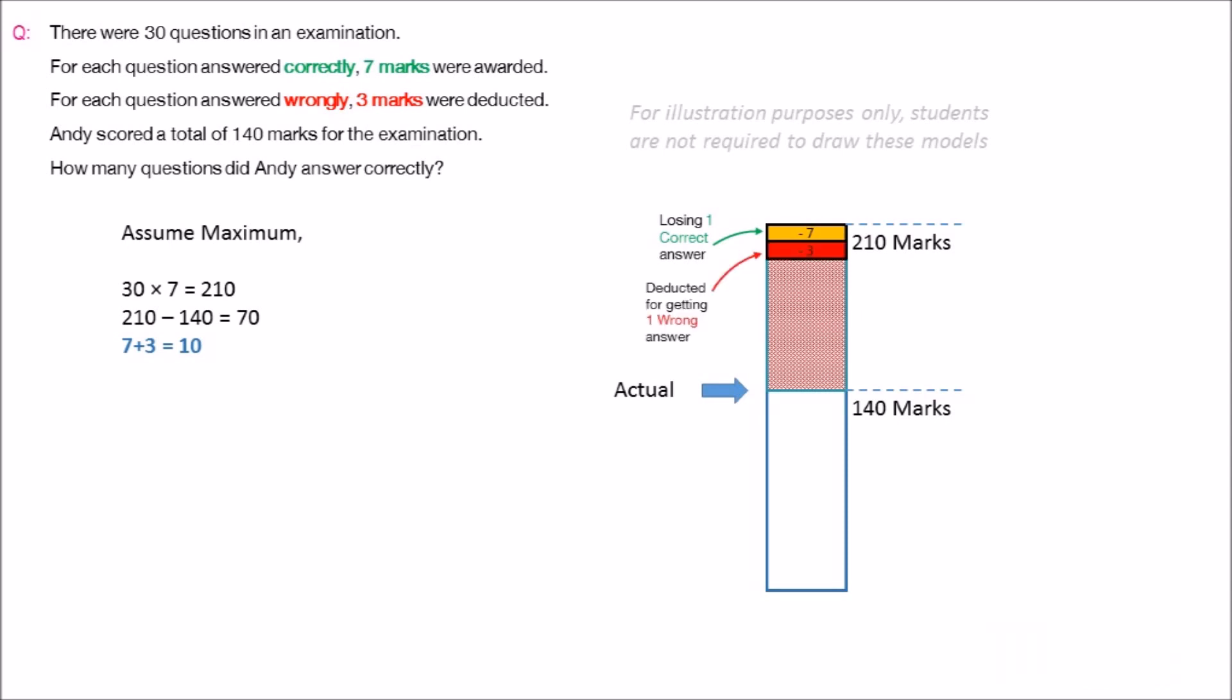Thus, when we replace one correct answer with one wrong answer, the total marks loss is a sum of seven and three, which equals 10.